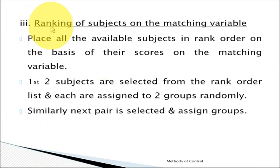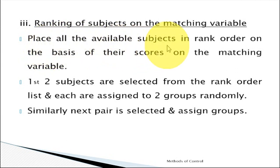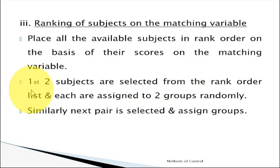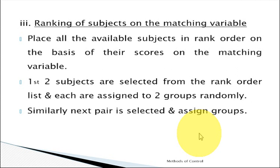Another way of matching is ranking of subjects on a matching variable — whatever variable may disturb the relationship between the independent and dependent variable. We conduct a test and based on scores, place all available subjects in rank order from highest to lowest on the matching variable. The first two subjects from the rank order are selected, one is put in the control group and the other in the experimental group randomly. Similarly, the next pair is selected and assigned to either the control group or the experimental group. In this way, the extraneous variable will be controlled to a large extent.